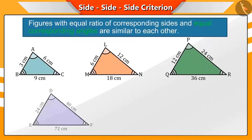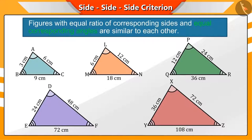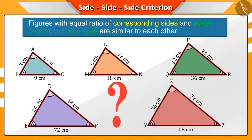You are given some triangles here. Are all the corresponding angles of these triangles equal? And what do you understand by the corresponding sides of these triangles?